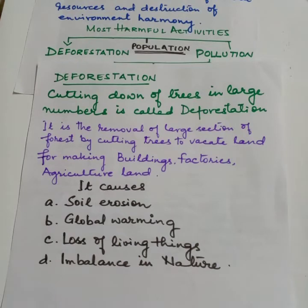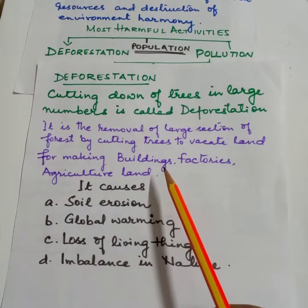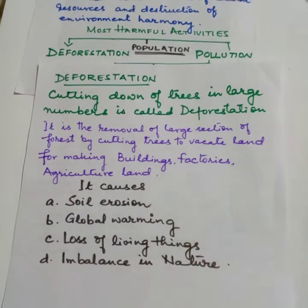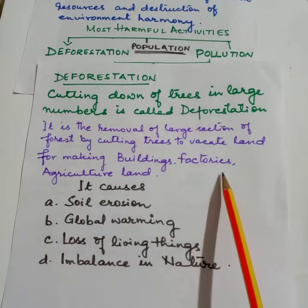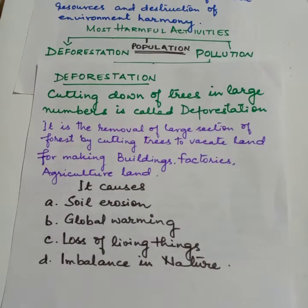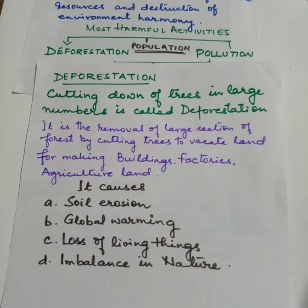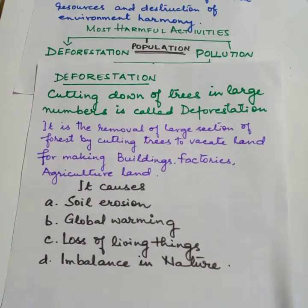More the population, more buildings are required, more things are required, so factories are required, and more food is required, so agricultural land is required — for which human beings are cutting down trees.